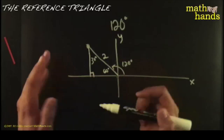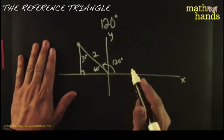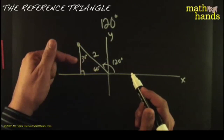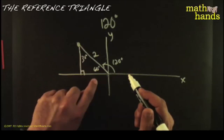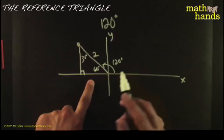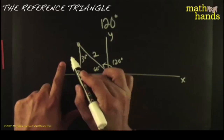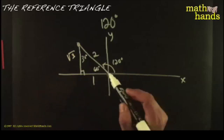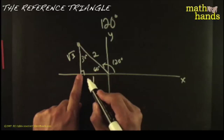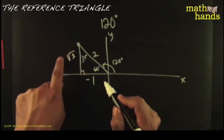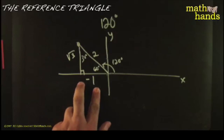Now we use our excellent 30-60 triangle skills — you should own it, be very comfortable with 30-60 triangles. Across from 30, you always find the smallest side, which is always half the hypotenuse, so this is going to be 1. The other one is always the small one times the square root of 3. Then we label the sides and include the signs. If you're going left, that's negative; if you go up, that's positive. There you go — that's the sides labeled including the sign.